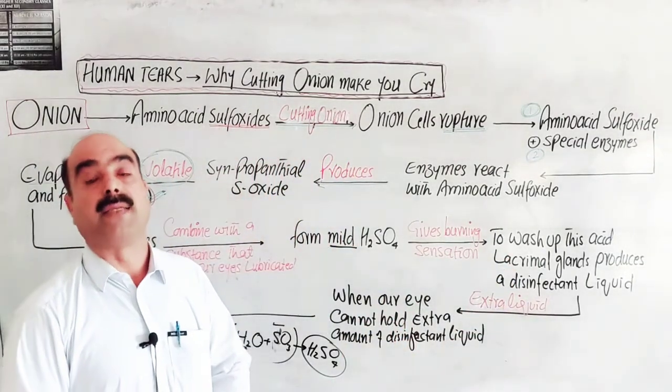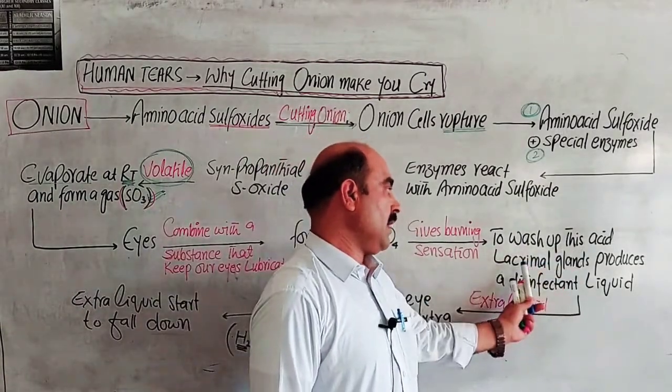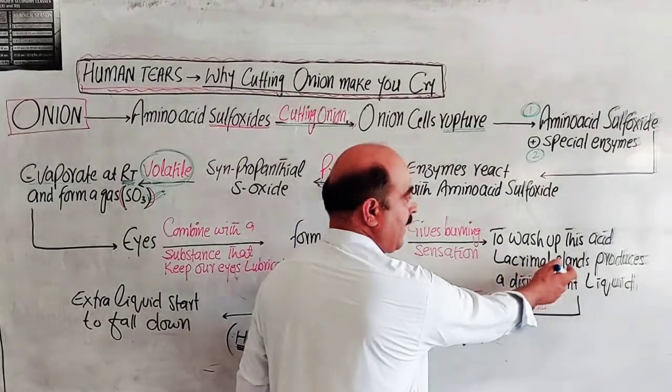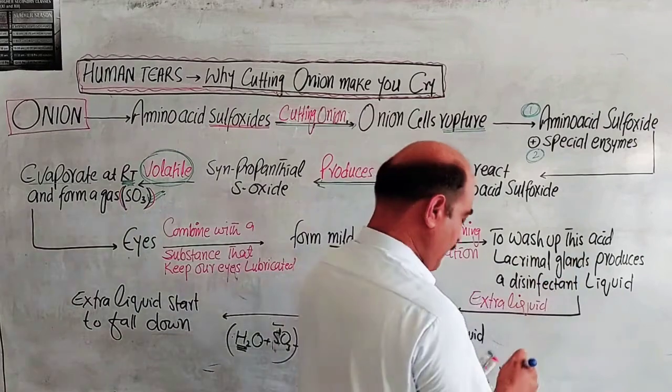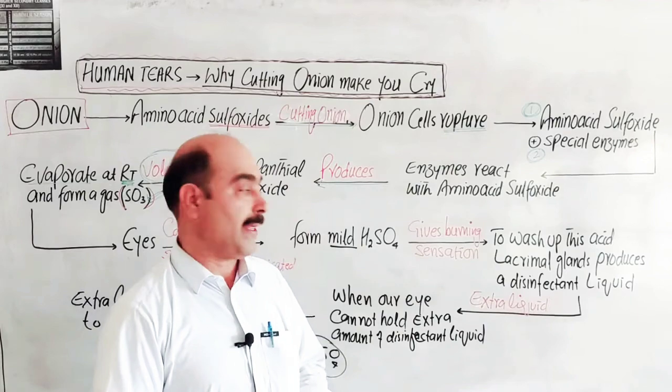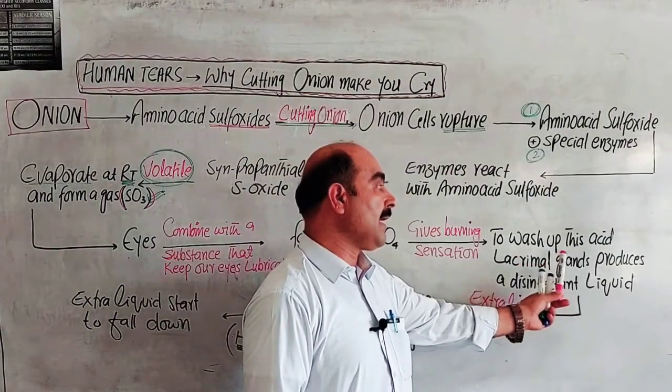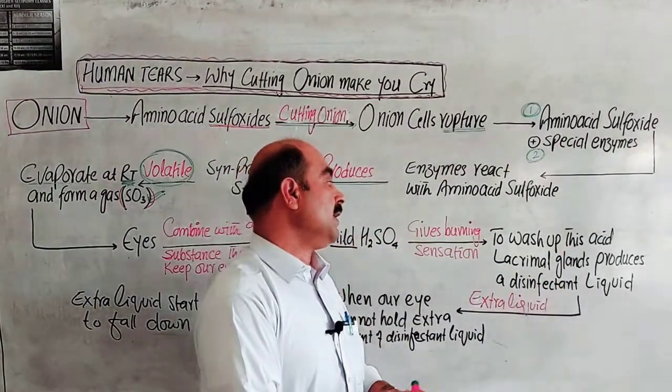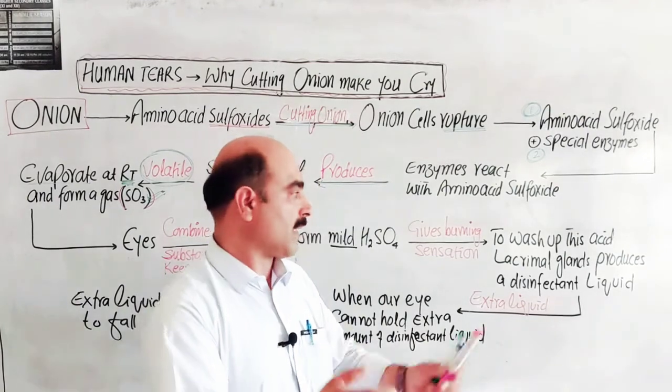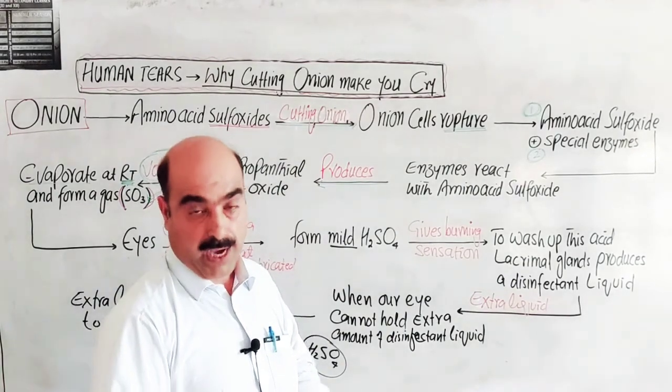To wash this acid, the lacrimal glands produce a disinfectant liquid. Allah has created in our body lacrimal glands. These lacrimal glands produce a liquid which is disinfectant. This disinfectant has the effect to neutralize the acid. A gland becomes active and releases this disinfectant liquid.